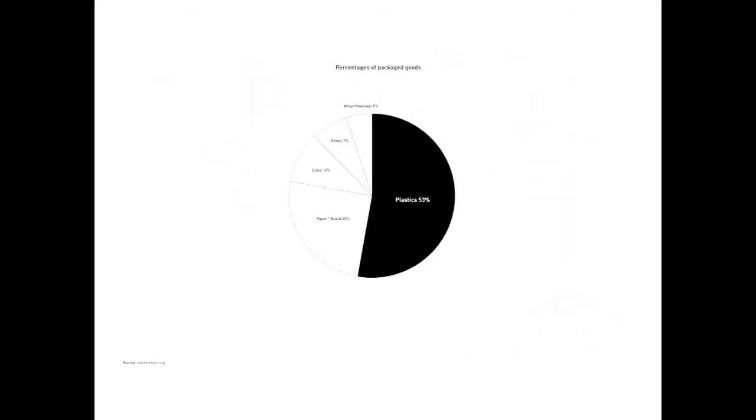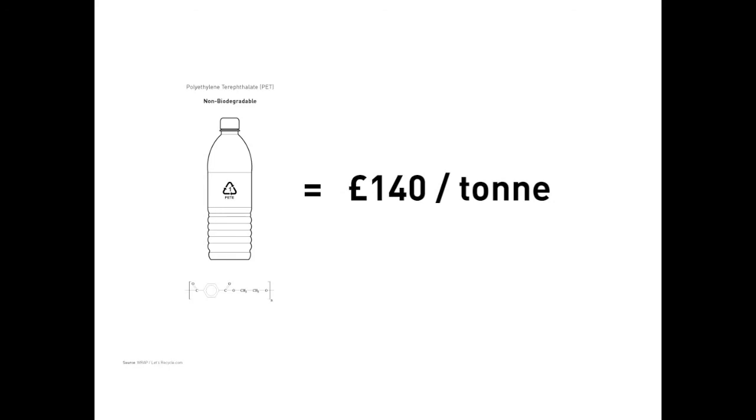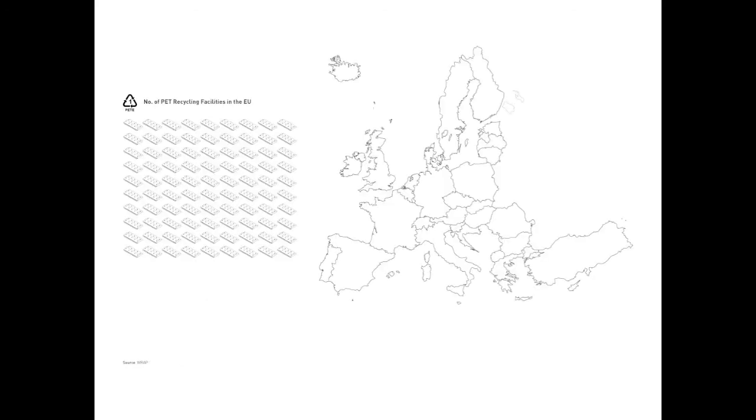Over half of all consumer goods in the UK are packaged in plastic. PET plastic present in our beverage bottles, for example, is currently worth about £140 a tonne, making PET recycling a competitive market, with about 90 PET reprocessing plants spread across the EU.